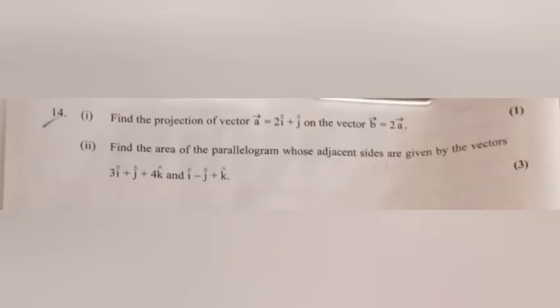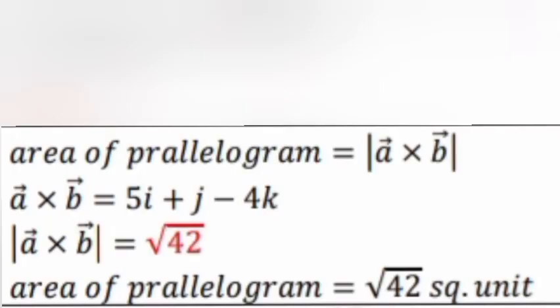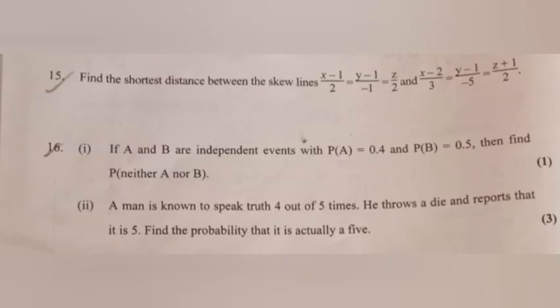Question 14.2: Find the area of the parallelogram whose adjacent sides are given by vectors 3î + ĵ + 4k̂ and î − ĵ + k̂. Answer: a × b = 5î + ĵ − 4k̂. |a × b| = √42. Area of parallelogram = √42 square units.